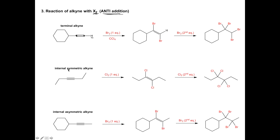We can have an internal symmetric alkyne where on either side of the alkyne you have the same groups — for example, an ethyl group on the left and an ethyl group on the right. Our alkyne is between two carbon groups, meaning internal, and it is symmetric. The third type is an internal asymmetric alkyne, where the groups on either side of the alkyne are different — for example, a cyclohexane ring on one side and a methyl on the other.